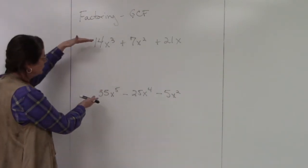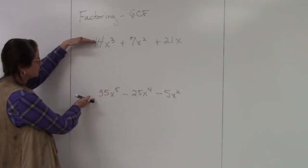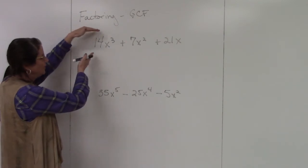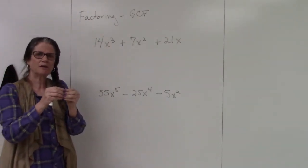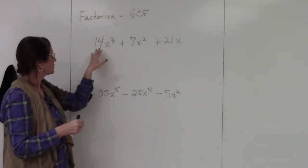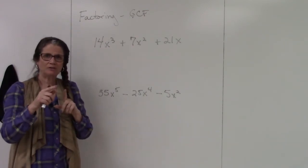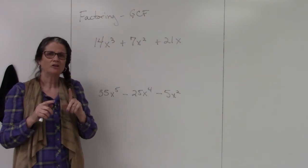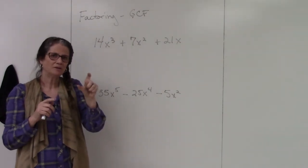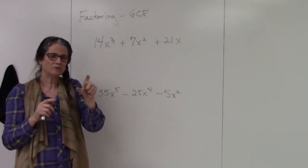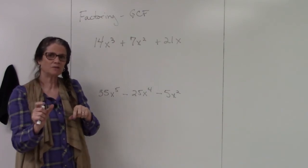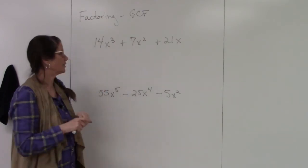So I have two polynomials here. The first one we're going to look at it, and I want you to look at it in terms of the coefficients, which is the number in front, and then I also want you to look at the exponent. Okay, so here's the idea. You want the highest number that you can pull out of all terms and the lowest exponent. Highest number, lowest exponent. So here we go.